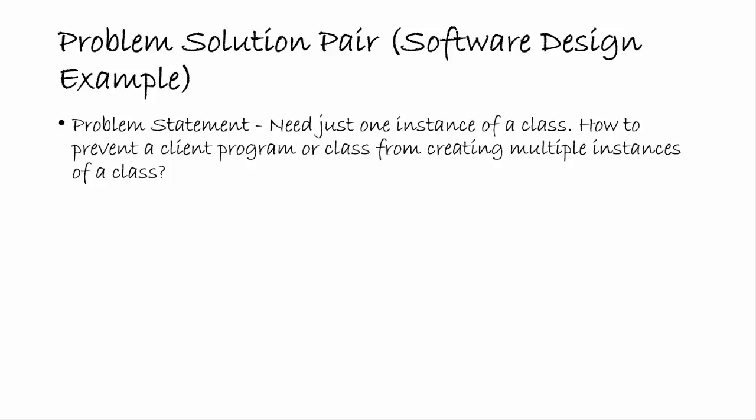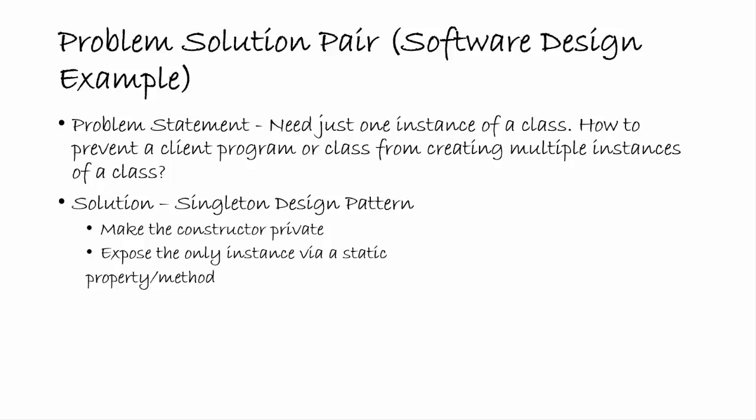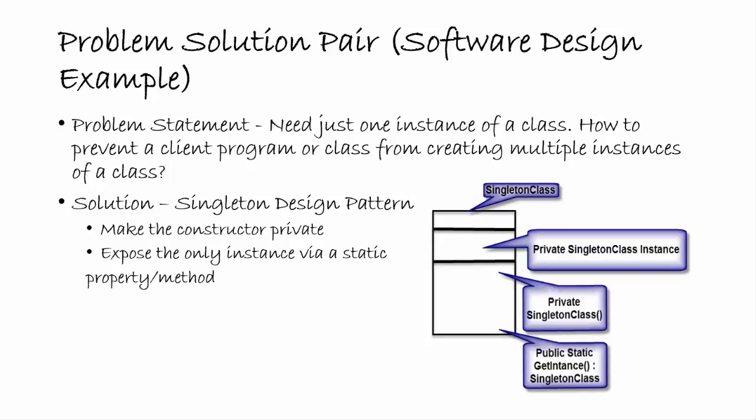Now for our software design example. The problem: we need just one instance of a class, and we need to prevent client programs from creating multiple instances. The solution is to make the class a singleton. You make the constructor private so no outside program can create instances, and you expose the only instance via a static property or method. In our example, the class is called SingletonClass, it has a private attribute called instance, a private constructor, and a static property that returns the only instance. This is a repeatable, highly reusable solution — the singleton design pattern.